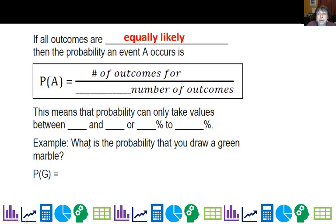The reason I like listing it this way is all of these are equally likely. If all outcomes are equally likely, then the probability an event A occurs is the number of outcomes for A divided by the total number of outcomes. This means that probability can only take values between zero and one, because the number of outcomes for A cannot exceed the total, so your maximum is one, and the least number of outcomes for A is zero. It can never be negative.